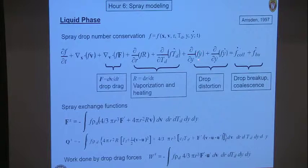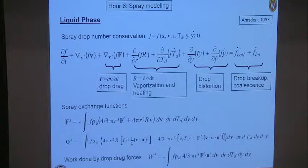There are also changes due to droplet temperature from heating, changes due to droplet distortion and its rate, and source terms that change the distribution function from collision and coalescence. When two droplets collide, you reduce the number of droplets in the probability function and change the size of the drop formed. Breakup similarly changes the distribution. So I need models for drag, vaporization, heating, drop distortion, collision, coalescence, and breakup.